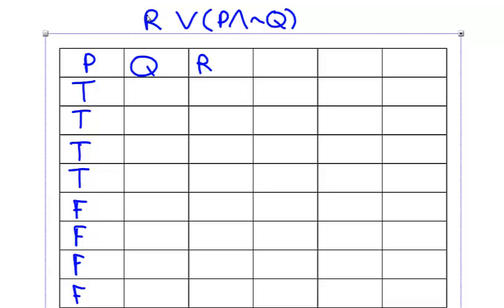The next column Q will alternate true, true, false, false all the way down, just like this.